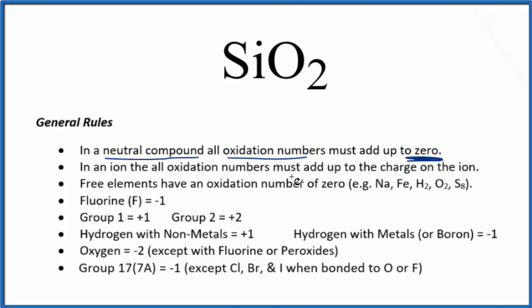When we look at our rules, we don't see Si listed, because we really need to see what it's bonded to in order to figure out its oxidation number. Here it's bonded to oxygen — two oxygen atoms.